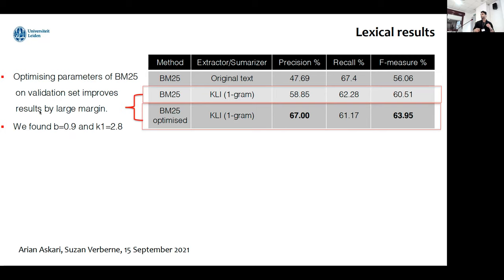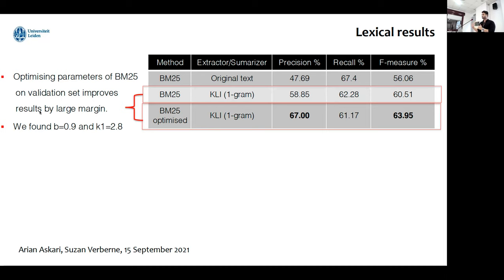We also tried to see how optimization works. After optimizing BM25 on the validation set, we saw it can improve BM25 by a large margin. We got the best result for BM25 using KLI and optimizing BM25 on the validation set, and we found high values for B and K1. Based on the literature, we concluded that because we have long documents with broad topics, it makes sense to tune the model to high values for B and K1.